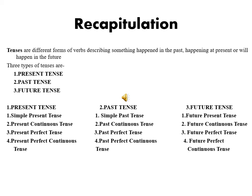Second tense is past tense. Its four types are simple past tense, past continuous tense, past perfect tense, and past perfect continuous tense. Third type is future tense, again divided into four types: simple future tense, future continuous tense, future perfect tense, and future perfect continuous tense. So here we end our today's topic.